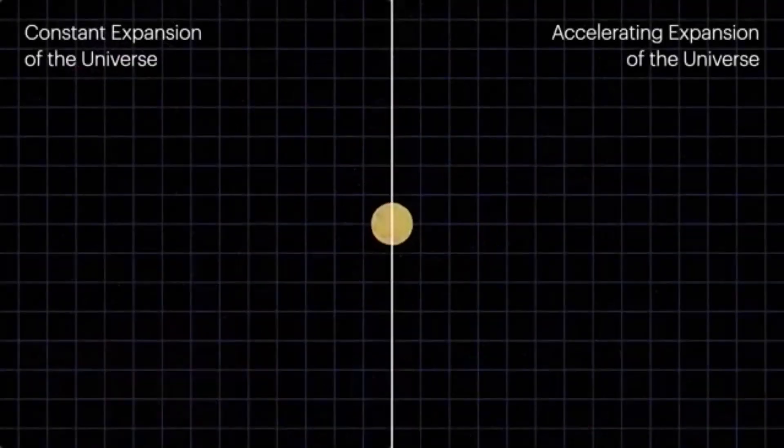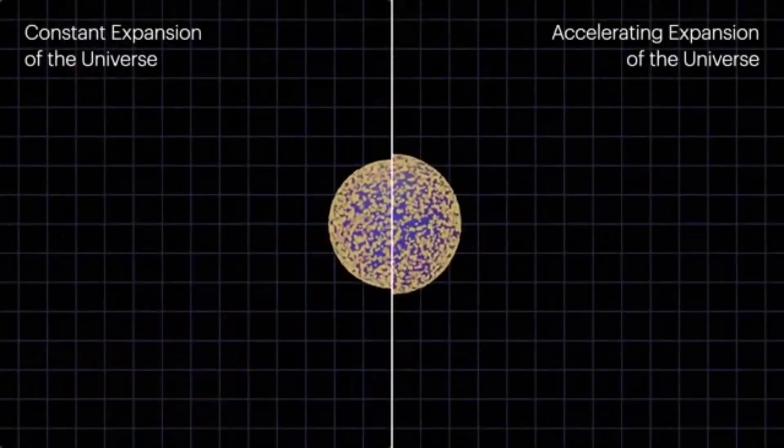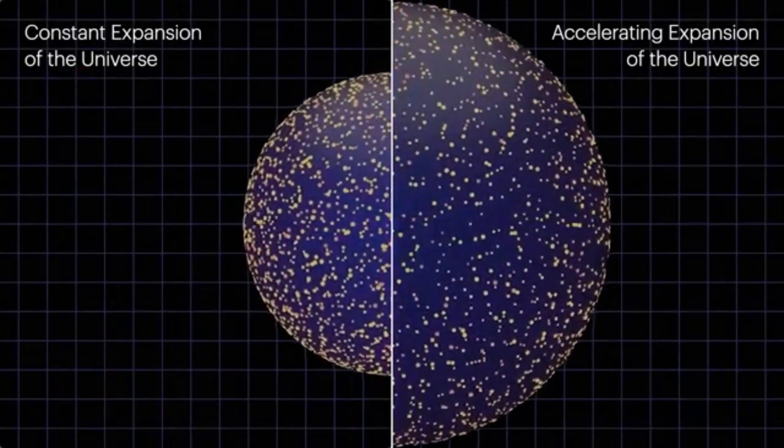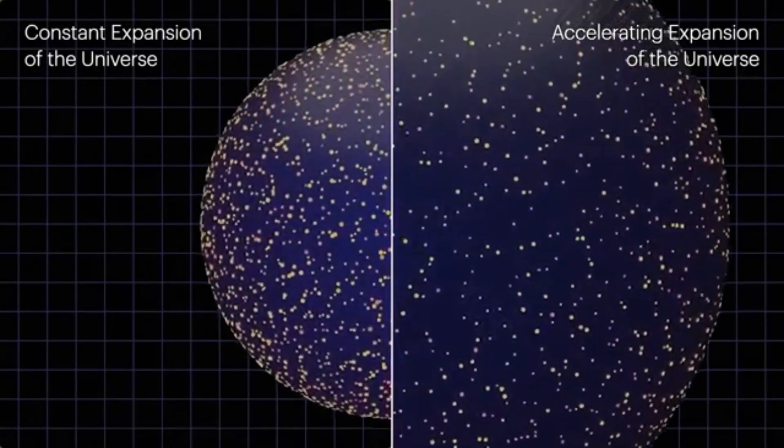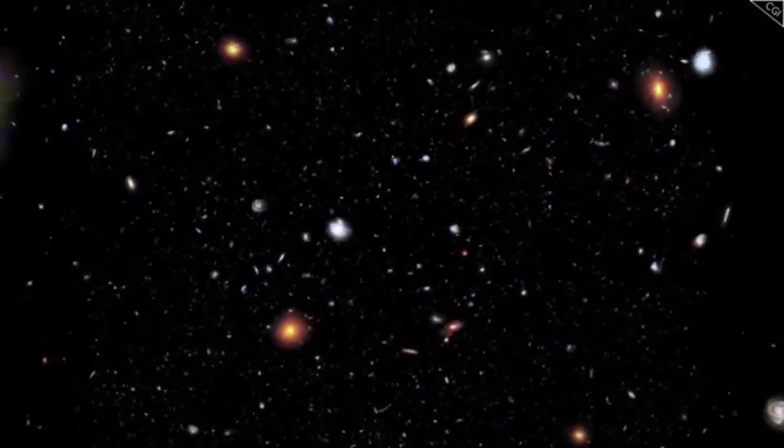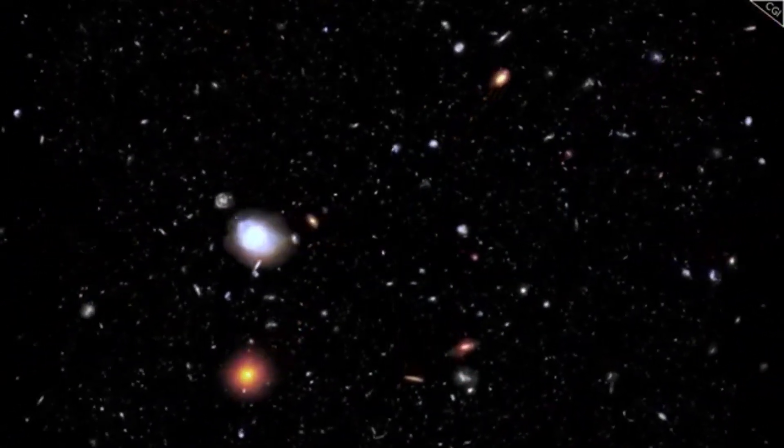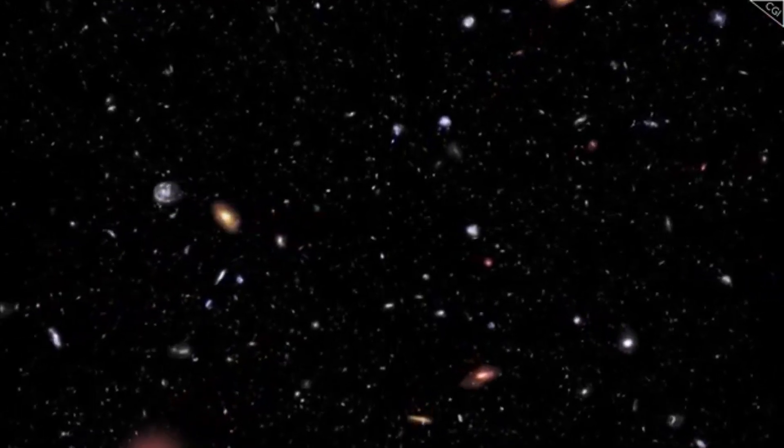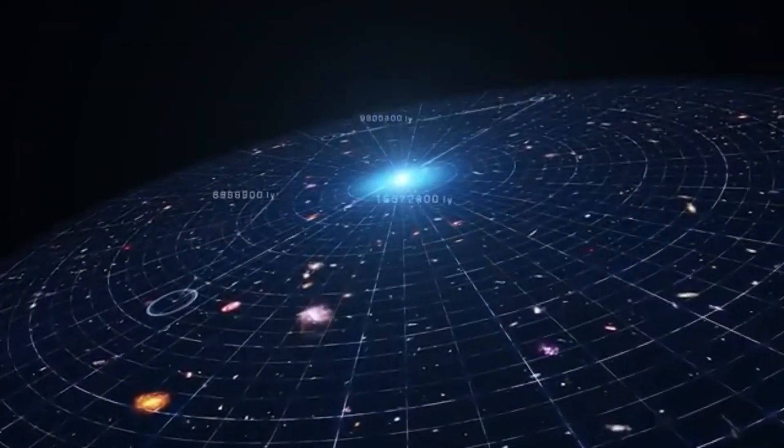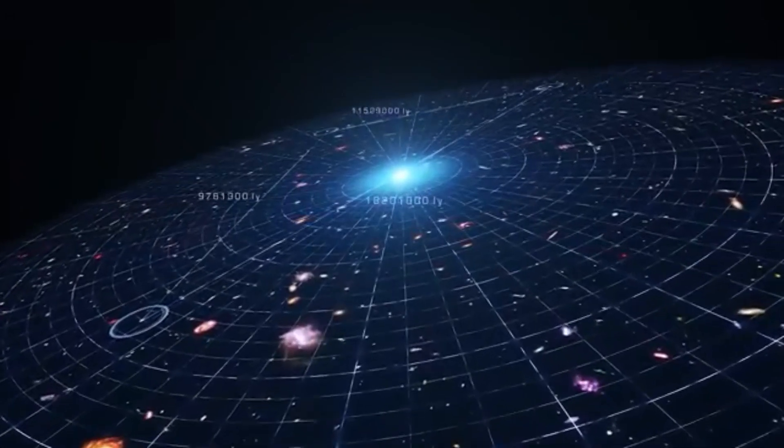These fields are constantly moving due to quantum fluctuations, brief changes in energy similar to ripples in a wave. For example, an electromagnet can cause changes in an electromagnetic field. Even in their lowest state, known as the vacuum state, fields remain active. Pairs of positive and negative particles continuously borrow energy from the vacuum, briefly appear, and then disappear.